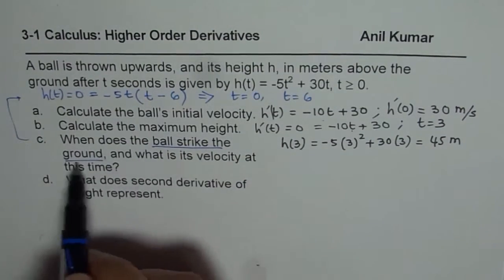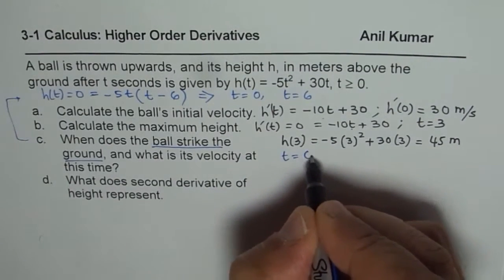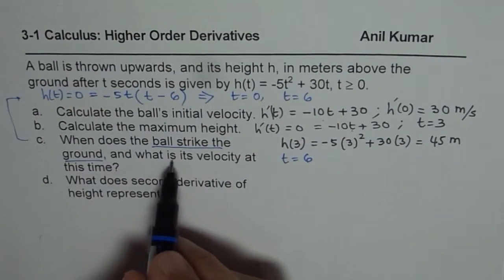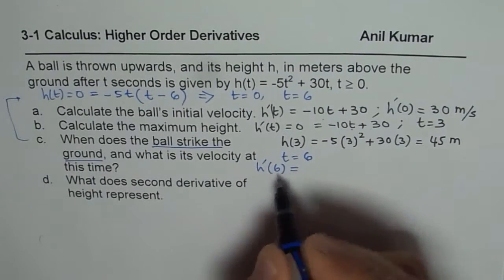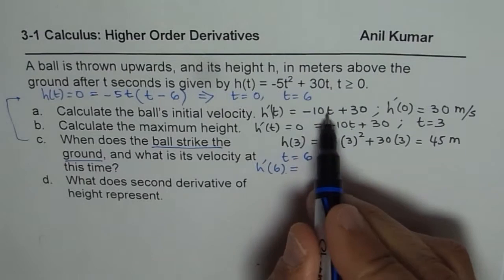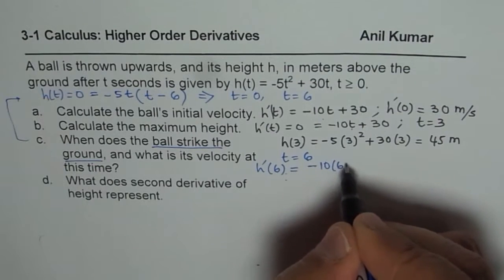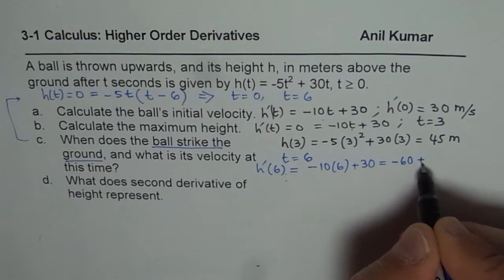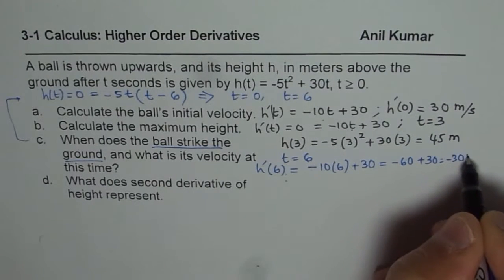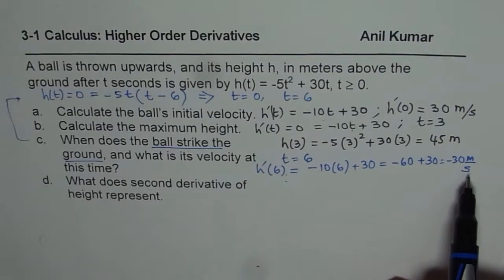So it says when does the ball strike the ground? It strikes the ground means comes back and strikes. That means that t = 6. And what is its velocity at this time? That means we want to find h'(t) at t = 6. So we will substitute 6 in our formula which we found in part a. So if you substitute 6 here, you get -10(6) + 30. So that is -60 + 30 and that is -30 meters per second.